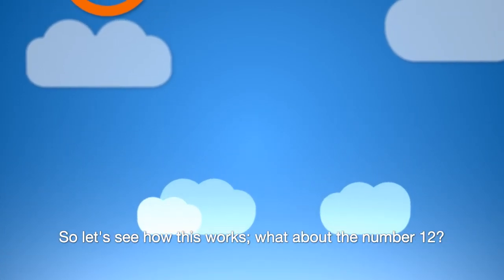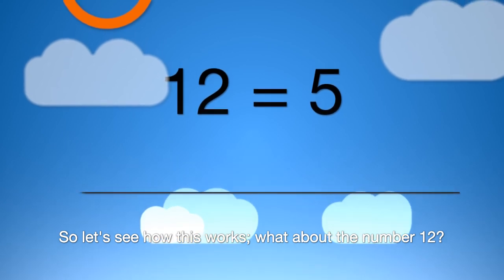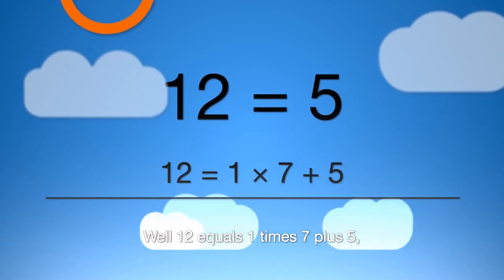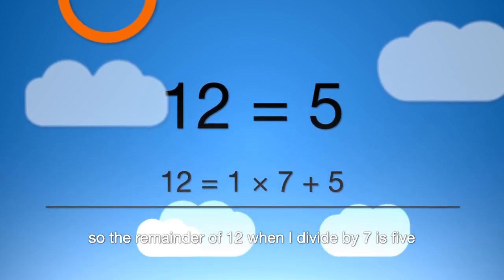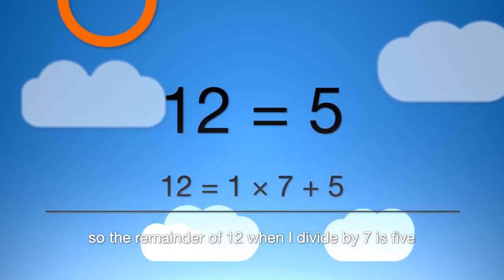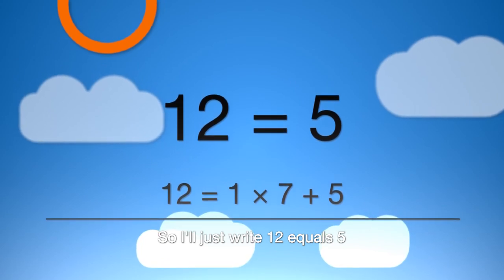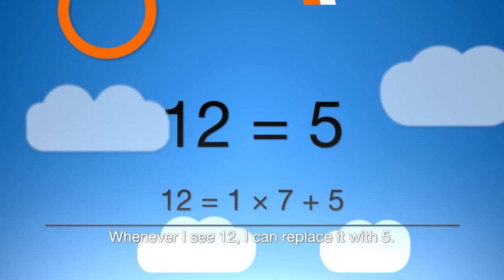So let's see how this works. What about the number 12? Well, 12 equals 1 times 7 plus 5. So the remainder of 12 when I divide by 7 is 5. So I'll just write 12 equals 5. Whenever I see 12 I can replace it with 5.